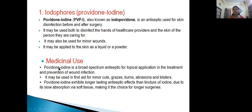Povidone Iodine is a broad spectrum antiseptic. Narrow spectrum acts either on gram positive or gram negative; broad spectrum acts on both gram positive and gram negative. It is an antiseptic for topical application — topical meaning surface. Used in treatment and prevention of wound infection, first aid for minor cuts, grazes, burns, abrasions, and blisters.